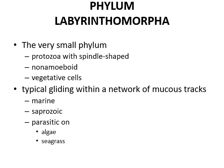Phylum Labyrinthomorpha is a very small phylum of protozoa with spindle-shaped, non-amoeboid vegetative cells that typically show gliding movement within a network of mucus tracks. They live in marine environments. They are saprozoic — meaning they feed on dead organisms — and are sometimes parasitic on algae and sea grass.